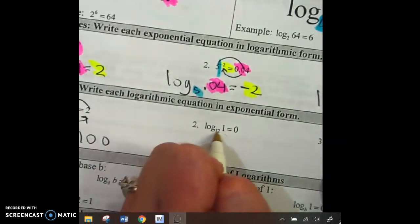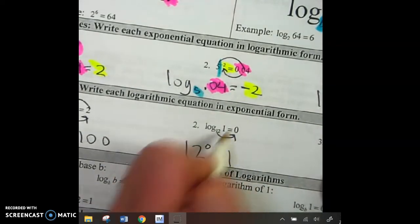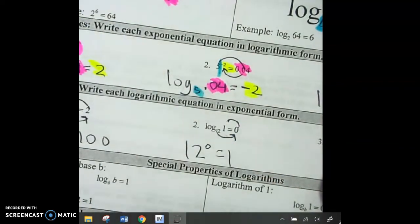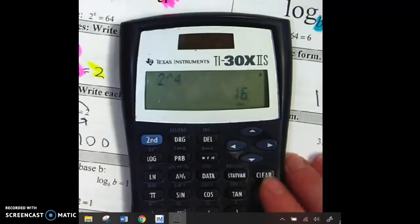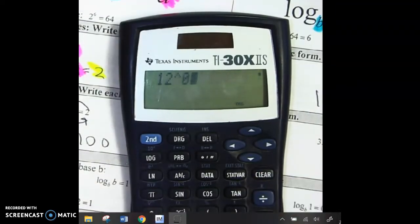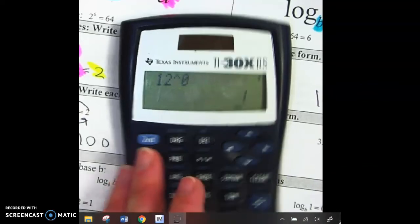Do it again. 12 to the 0 equals 1. How do I know if that's the case? 1. And if you don't believe me, you're going to go 12 to the 0. And it's 1. That's how you know you did it right.